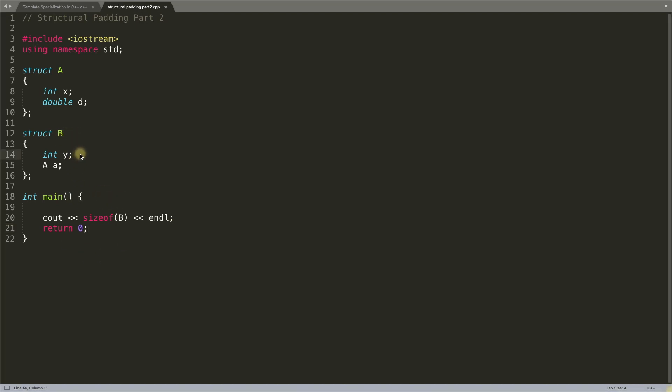Before that, let's see what you might have thought. It's easy to guess the size of struct A. This integer is 4 bytes and this double is 8 bytes, but structural padding doesn't work like simple addition. Structural padding will see that the biggest size among these two is double, which means 8. So it will create an 8-byte memory slot and try to place integer x inside that. Integer x will occupy only 4 bytes and the remaining 4 bytes will be wasted. After that, double d will come - another 8 bytes. So these two data types will result in 8 plus 8, which is 16 bytes.